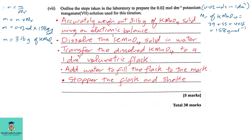After weighing on the analytical balance, transfer the solid to a beaker to ensure it is completely dissolved, then transfer to the 1 dm³ volumetric flask. Add distilled water to fill to the mark, then shake to obtain a homogeneous solution.